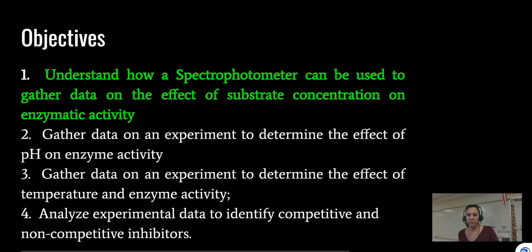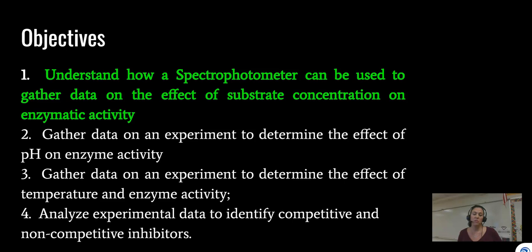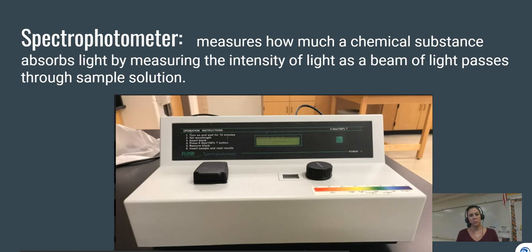We're going to see how spectrophotometry can be used to measure enzymatic activity. This video covers how a spectrophotometer gathers data on enzyme activity and how substrate concentration affects enzymes. The next video looks at pH effects, the third covers temperature effects, and the fourth activity — which has no video — provides data for plotting competitive and non-competitive inhibitors to identify which is which.